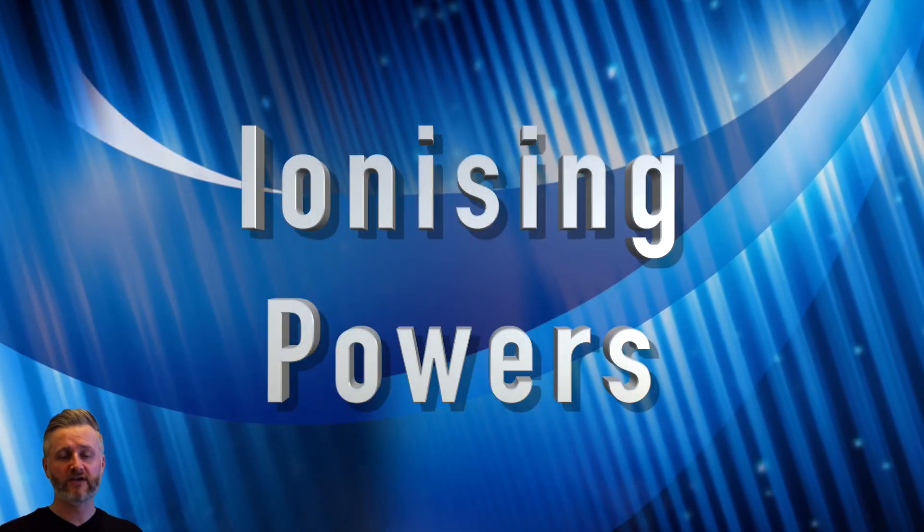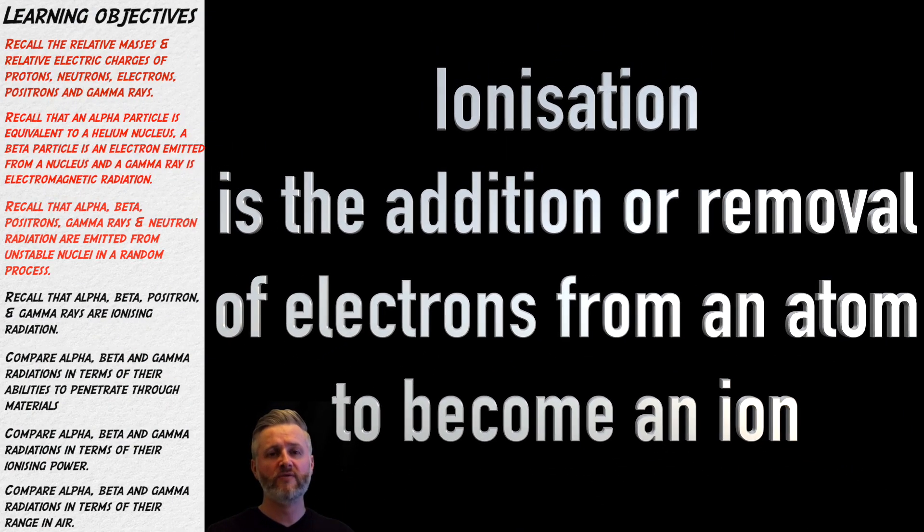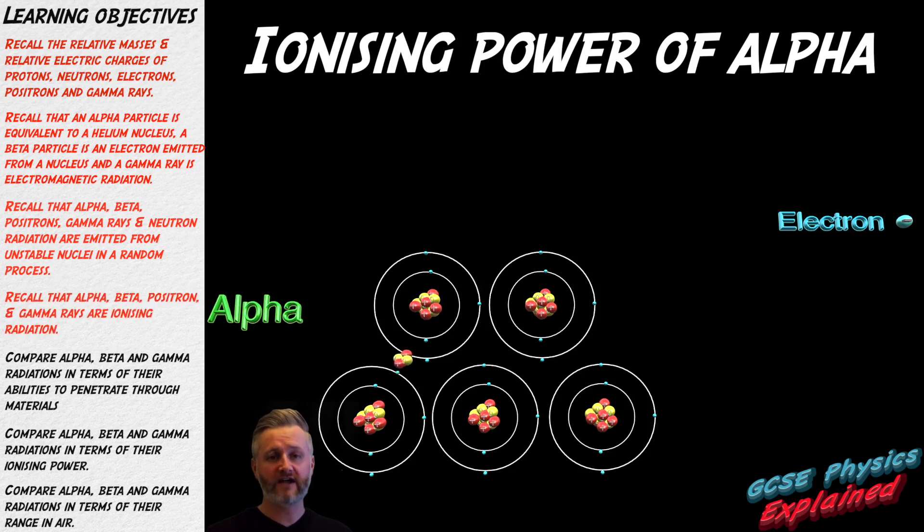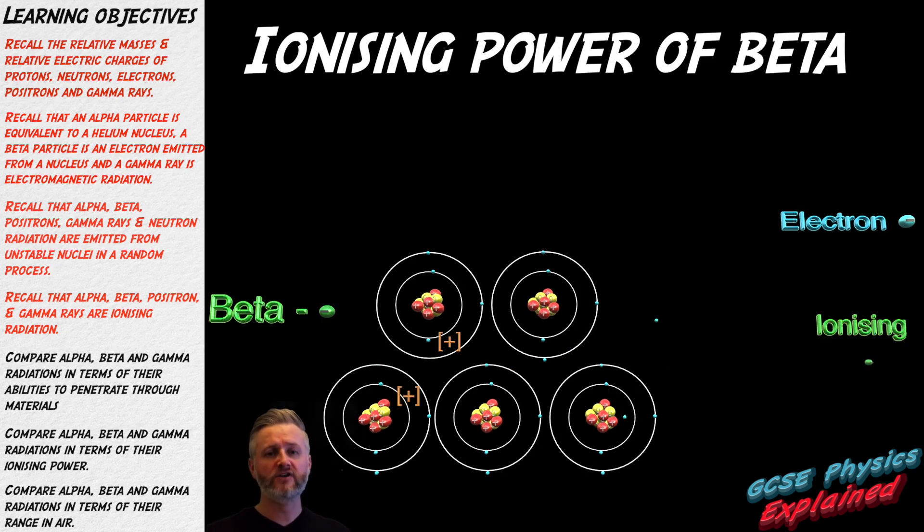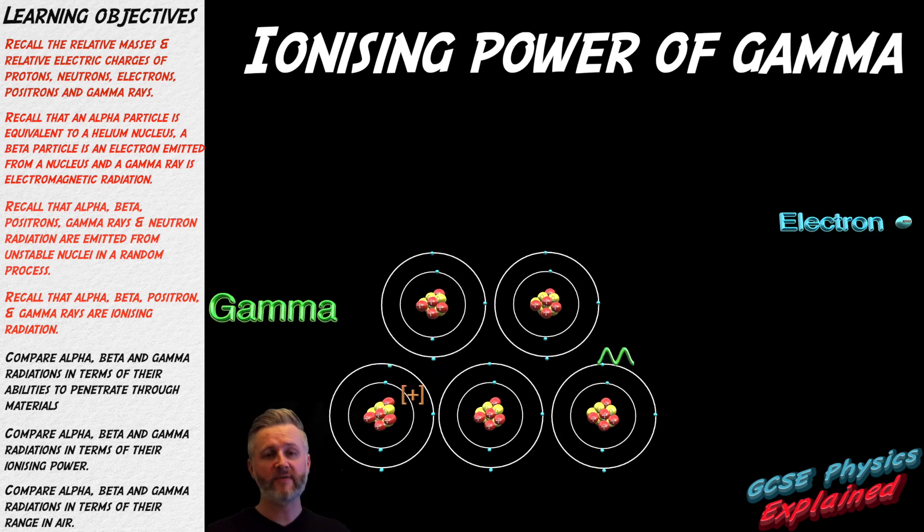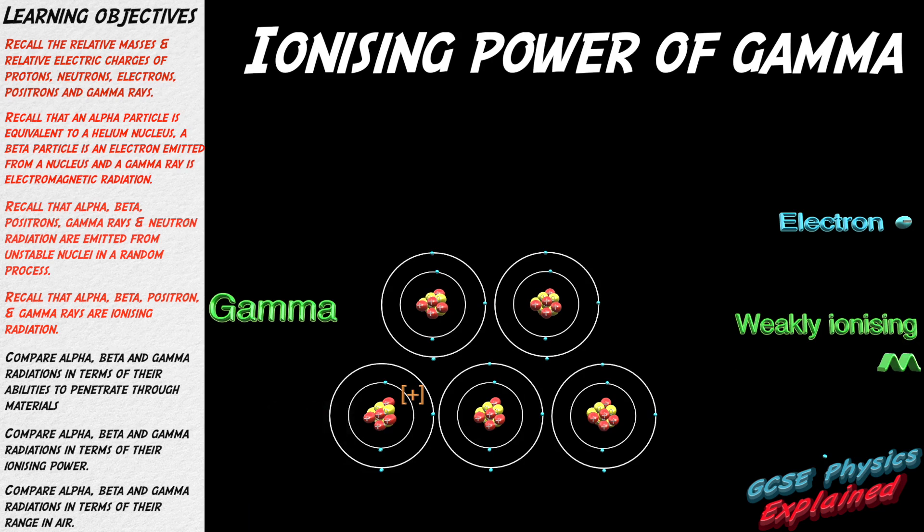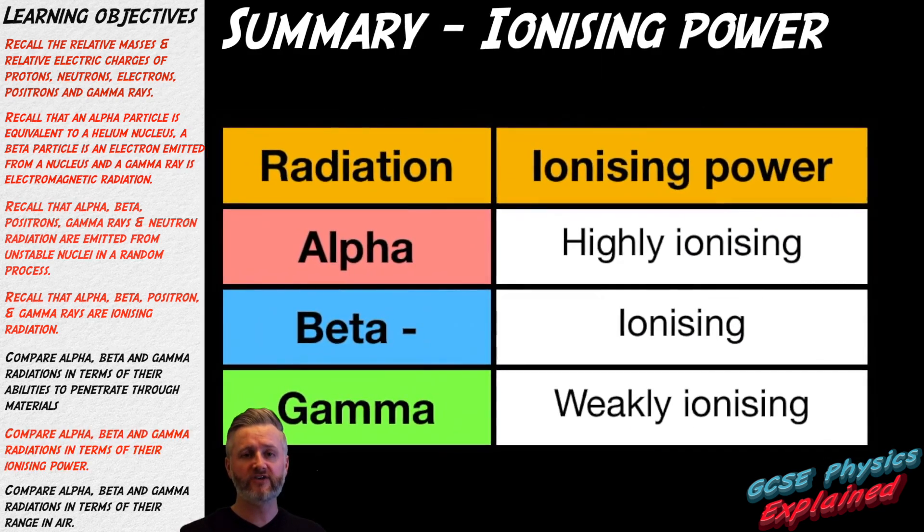Ionizing powers of nuclear radiation. Ionization is the addition or removal of an electron to become an ion. An ion is an atom with an overall electrical charge. Here you can see that alpha is highly ionizing because it knocks an electron off every atom that it collides with and turns them into a positive ion. Beta is ionizing but not as much as alpha. Gamma is only weakly ionizing as shown by my animation. Here is a summary of the ionization powers of nuclear radiation that you need to know for your exams.